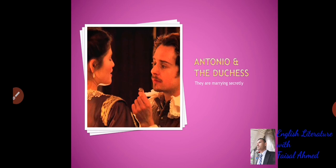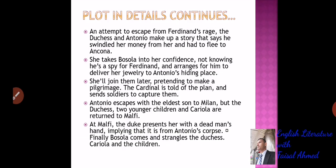Here we can see a scene from this text: Antonio and the Duchess marrying secretly, with Antonio offering the wedding ring to the Duchess. In the continuing plot, in an attempt to escape from Ferdinand's rage, the Duchess and Antonio make up a story that he swindled her money and had to flee to Ancona.